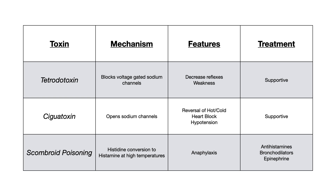The last point: scombroid poisoning is really the only poisoning where treatment is not just supportive. Because it's due to elevated histamine, you treat with antihistamines, bronchodilators, and epinephrine if needed.